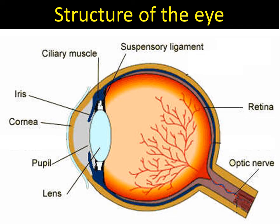A quick video going through the structure of the eye that you need to know for GCSE physics. We'll start with the cornea. This eye is looking to the left, so it's a cross section of an eye. The cornea is the window at the front of the eye — it's a transparent material. It's mainly there to protect the eye from any sort of damage and debris.